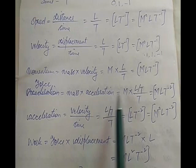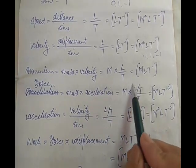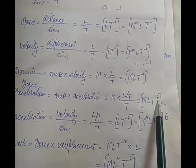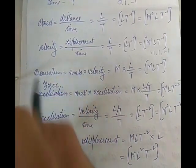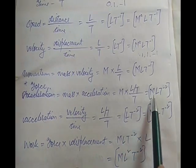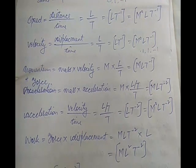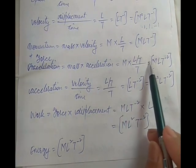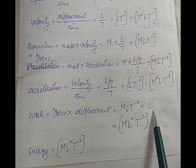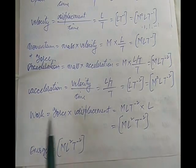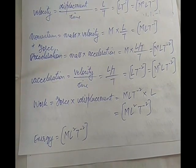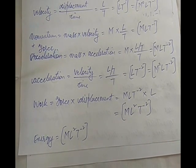For force, it is mass into acceleration: M for mass, and acceleration is L by T upon T, so this is MLT to the power minus 2 — the dimensional formula for force, which you very often need. Work is force into displacement. Force is MLT⁻², into displacement which is length L, giving ML squared T to the power minus 2. Energy has the same dimensional formula as work — ML²T⁻² — because energy and work are basically the same thing.